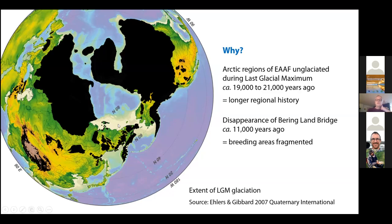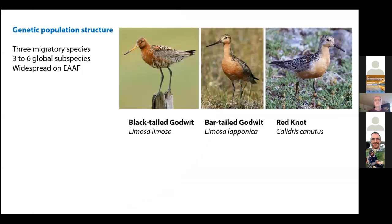The light areas of this map show where sea level was much lower during the last glacial maximum, meaning there was a land bridge connecting Alaska to the Russian Arctic. This disappeared about 11,000 years ago, meaning species and subspecies in this area were subdivided by a fragmenting habitat as sea levels rose. It's a very interesting area to be studying shorebird diversity.